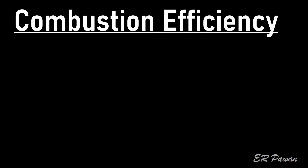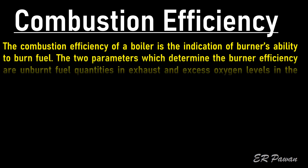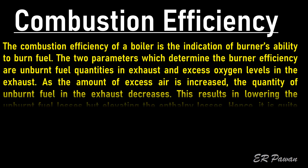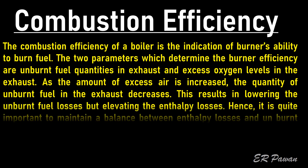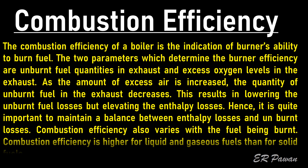Combustion efficiency: The combustion efficiency of a boiler is the indication of the burner's ability to burn fuel. The two parameters which determine the burner efficiency are unburned fuel quantities in exhaust and excess oxygen levels in the exhaust. As the amount of excess air is increased, the quantity of unburned fuel in the exhaust decreases. This results in lowering the unburned fuel losses but elevating the enthalpy losses. Hence, it is quite important to maintain a balance between enthalpy losses and unburned losses.